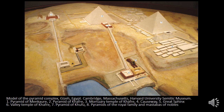The funeral complexes here, very much like the step pyramid with Djoser, are inhabited spaces long after our pharaohs are dead and interred. These are still active spaces where offerings are being made and clergy and priests are using these areas. That's important to keeping the site active and keeping the pharaoh's Ka — their soul — happy and prosperous in the afterlife.